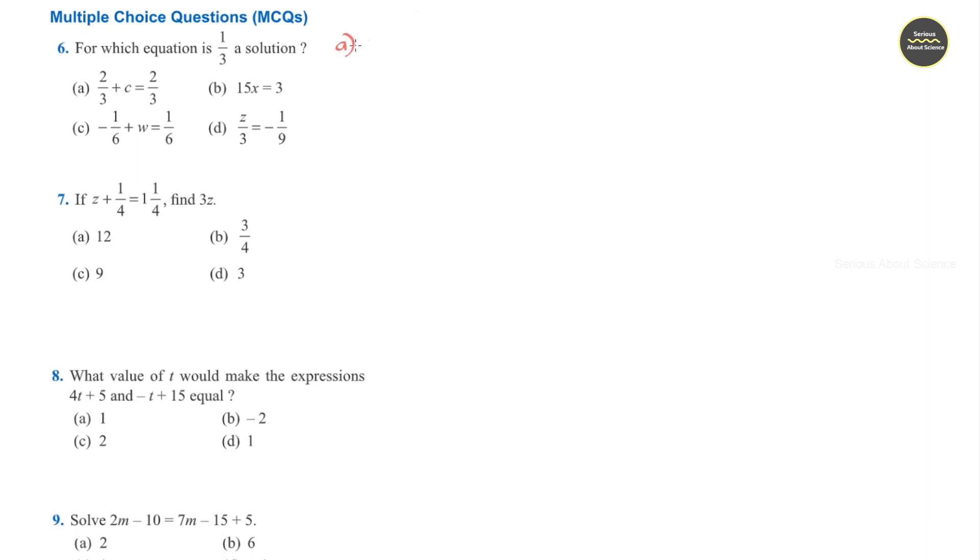So option a, 2/3 plus c. Instead of c we can substitute 1/3. Now here the denominators are the same, so I can directly add. It becomes 3/3 or equal to 1, but here it is given as 2/3. We know that 1 is not equal to 2/3, so option a is not the answer.